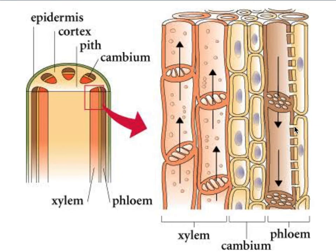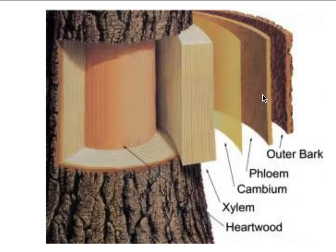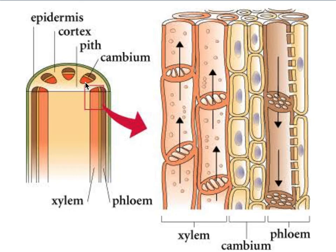Companion cells help in sideways conduction, and the products of their metabolic activities are drained into the sieve element for use. The yellow line is cambium. To its interior is xylem and to its exterior is phloem. Cambium is a layer of undifferentiated cells that keep dividing to produce xylem on the inner side and phloem on the outer side. We call it vascular cambium since it produces vascular tissue xylem and phloem.